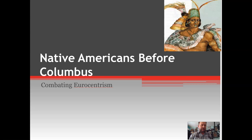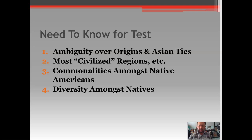We also have a standard test — I'm not particularly proud of it, but it's one of many ways of evaluating your work. The test topics include: number one, ambiguity over origins and Asian ties of Native Americans; number two, regions Europeans considered most civilized; number three, commonalities among Native Americans that helped form certain stereotypes; and four, diversity among Native Americans and stereotypical images conveyed by European chroniclers.